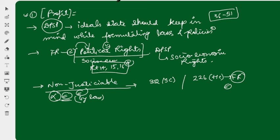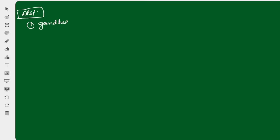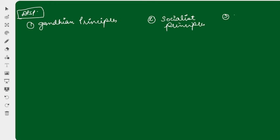Now let's move to the next board where I'll tell you about articles 36 to 51. The DPSP is divided into three categories: first, those based on Gandhian principles; second, those based on socialist principles; and third, those based on liberal intellectual ideas.